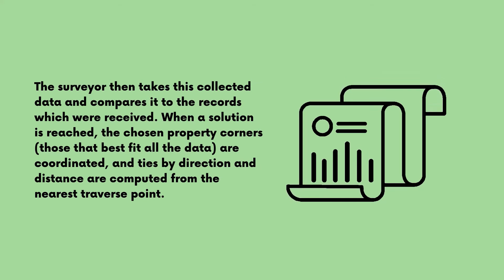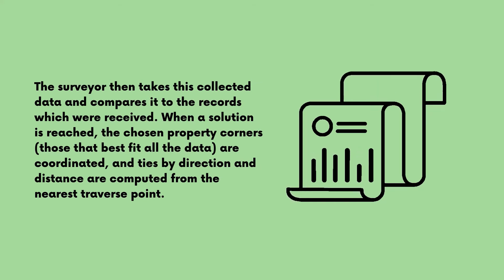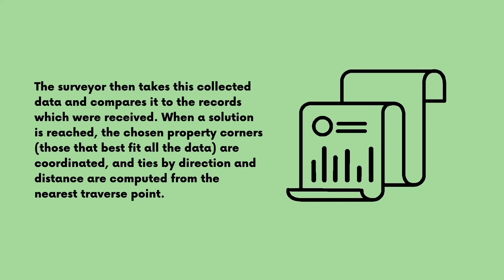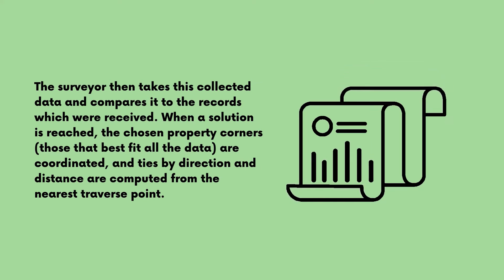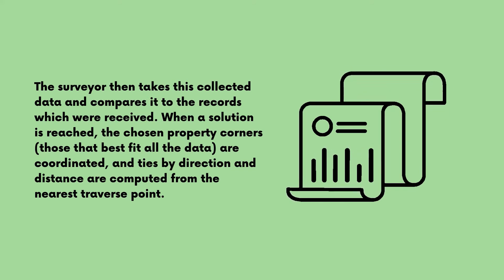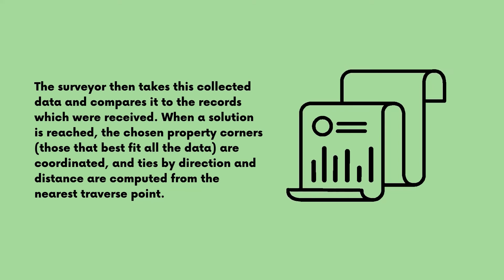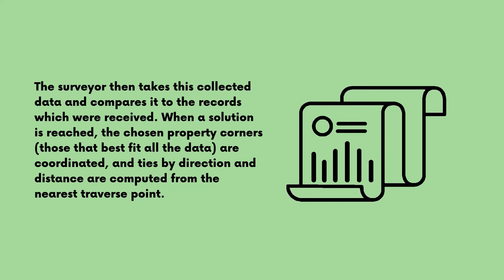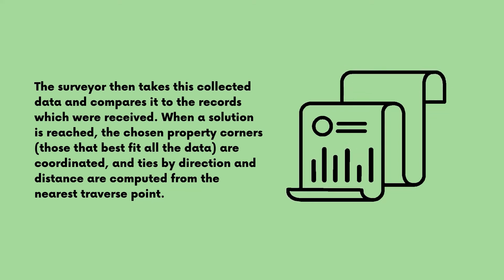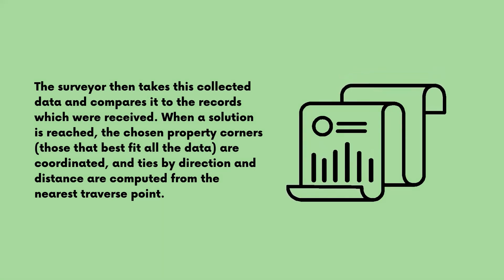This also includes walks and all buildings on the lot. When the surveyor gets all these data, they collect and compare it to the records which were received. When a solution is reached, the chosen property corners are coordinated and ties by direction and distance are computed from the nearest traverse point.